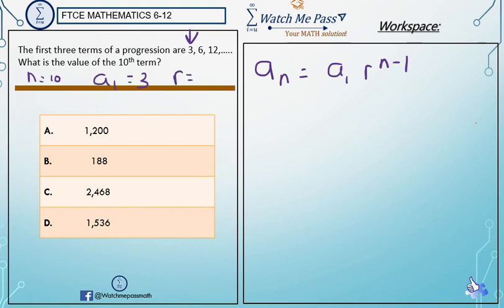r is the ratio. So if you're in a geometric sequence you're either multiplying or dividing. In this case we're going from 3 to 6 to 12. Well you're going up so you're multiplying because 3 times 2 is 6, 6 times 2 is 12. So you keep multiplying by 2. I see the pattern. So your ratio is 2.